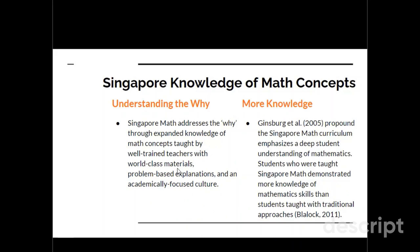Singapore also affords a better knowledge of math concepts. To unlock the power of math, we really need to understand the why behind concepts, and Singapore students have a better understanding of that than students in traditional math. They address the why through well-trained teachers, world-class materials, and problem-based explanations. Importantly, Singapore math teaches implicit math — basically the idea that math equals me, that math is in my life and I am part of the math of the world — which culturally helps students aspire to be better academically and gives them a driving force to understand and apply concepts in the real world.